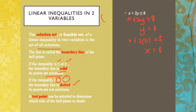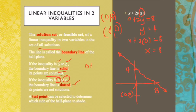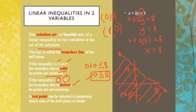So we have two points: when x is 0, y is 4, and when y is 0, x is 8. Since the inequality is less than or equal to, we draw a solid line. Then we use (0, 0) as our test point. We substitute: 0 plus 2 times 0 equals 0, and 0 is less than 8, so the answer is yes. Therefore, the shaded region is the area below the line.